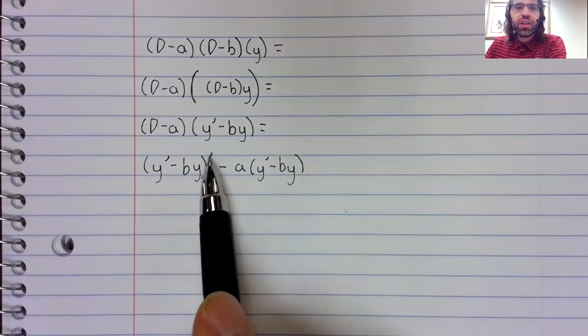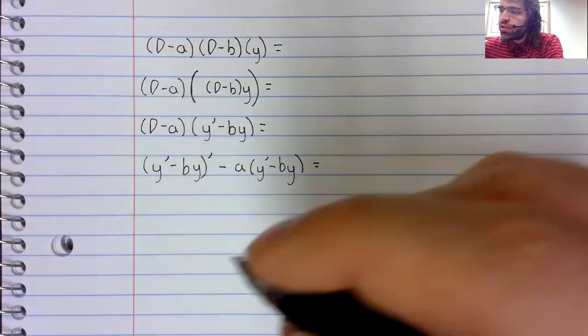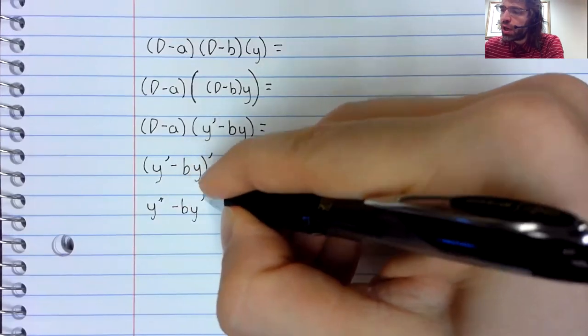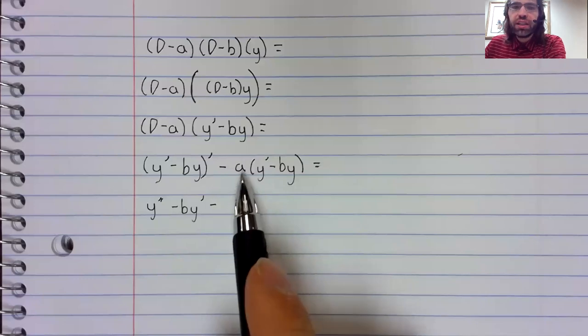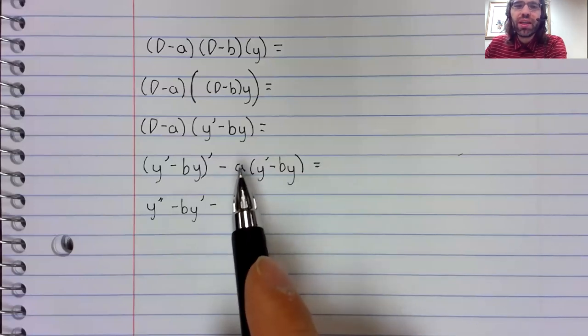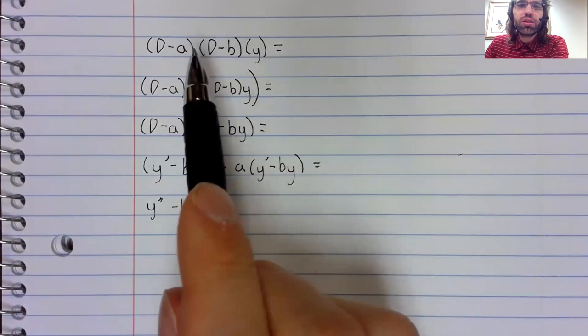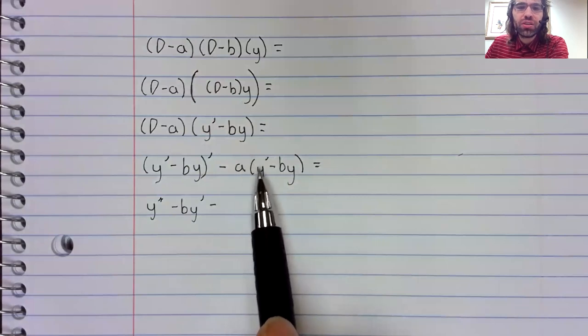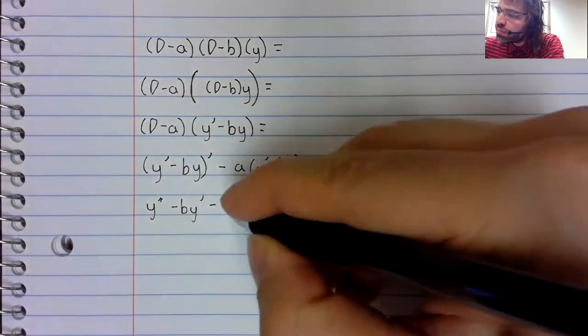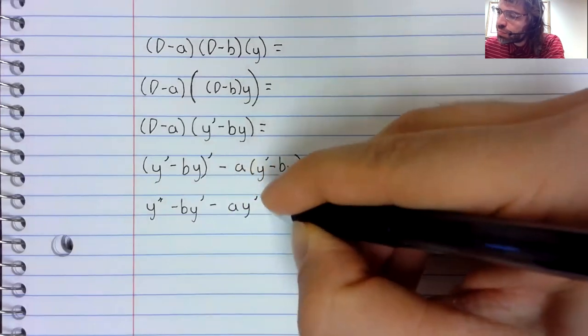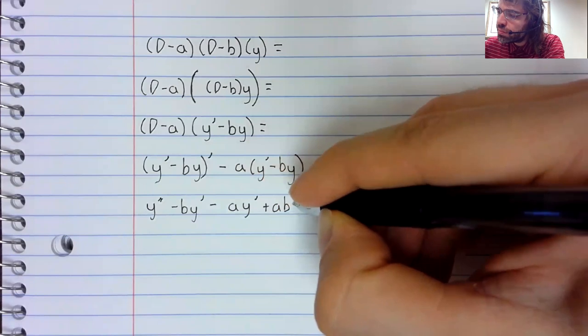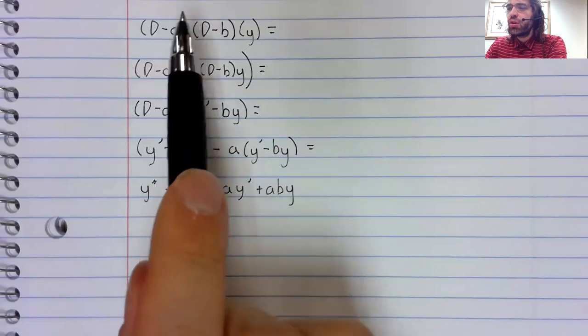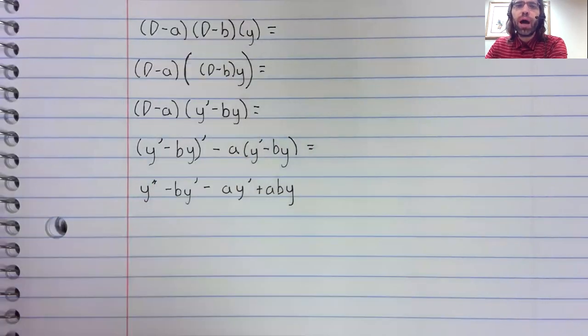Now, differentiation is linear. So this is y double prime minus b y prime. Now, this really is just multiplication. We had this stuff that looked like multiplication but wasn't. This really is just a constant times a difference.